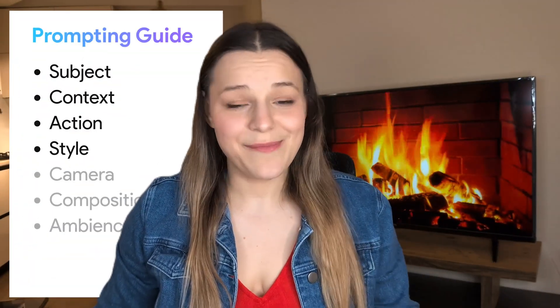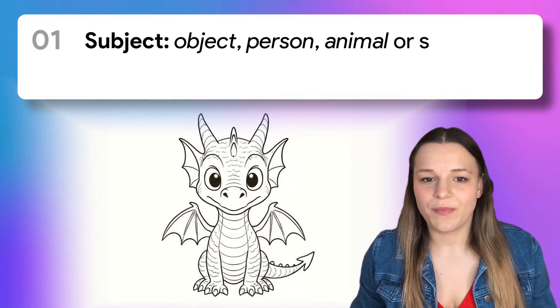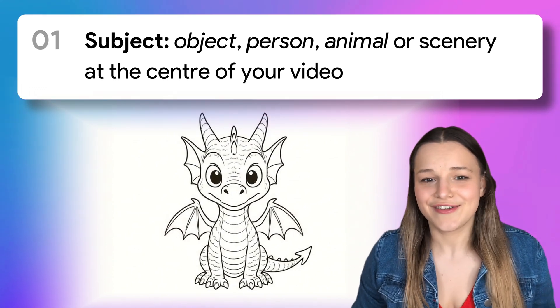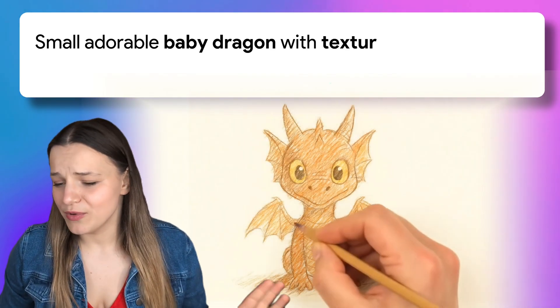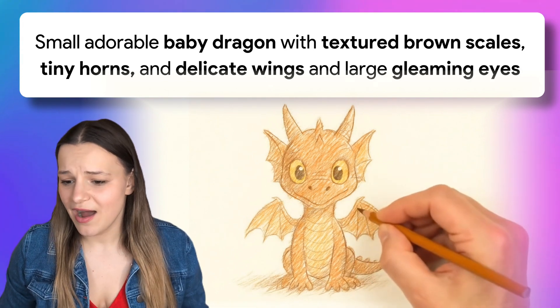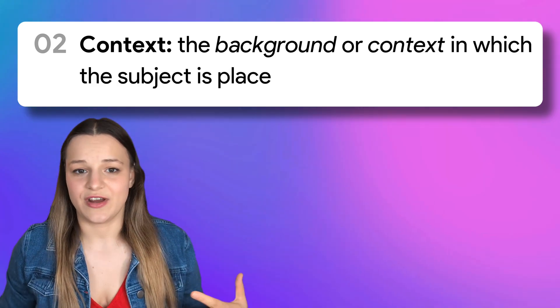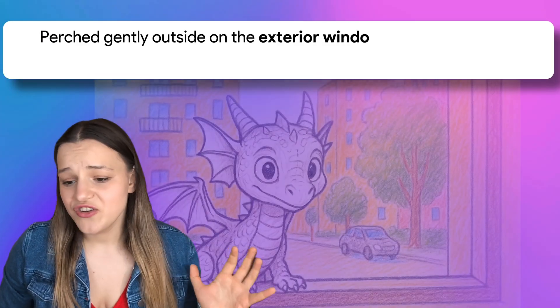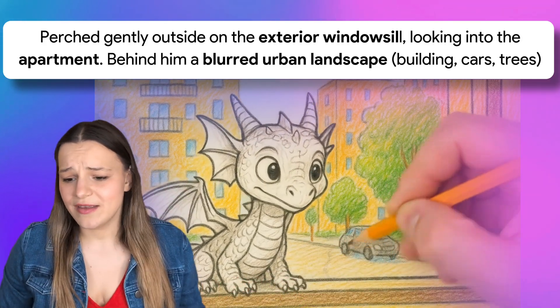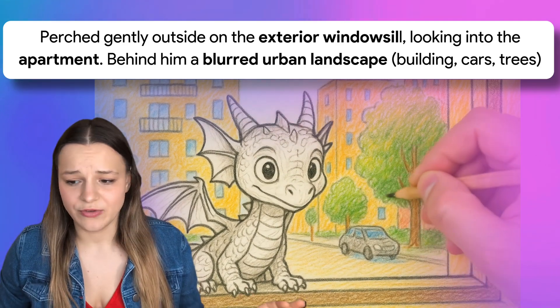There are four factors absolutely necessary to generate a great video. First, we've got our subject — the object, person, animal, or scenery at the center of your video. It's important to describe what the subject looks like instead of just saying 'dragon.' So I'd say something like: small adorable baby dragon with textured brown scales, tiny horns, delicate wings, and large gleaming eyes. Next, describe the background or context — something like: perched gently outside on the exterior windowsill looking into the apartment, with a blurred urban landscape, buildings, cars, and trees behind him.